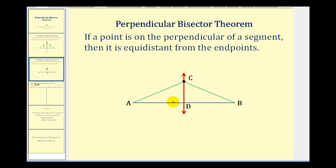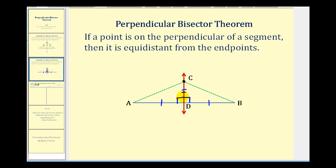This is a pretty straightforward proof. If we know that the red line is a perpendicular bisector of this blue segment, that tells us two things. First, segment AD is congruent to segment BD, and that angle CDA and angle CDB are right angles and therefore those two angles would be congruent. And if we make a segment connecting point C to point A and point C to point B, we can see that we have two triangles that share side CD. Segment CD is congruent to itself, so by side-angle-side, these two triangles are congruent, and therefore side AC would be congruent to side BC.